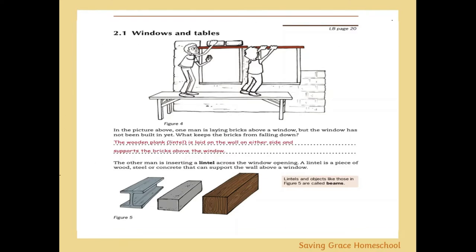The solution used in most cases is a lintel — a wooden plank or any other type of support that can be made from steel beams, reinforced concrete, or wood. You build around where you want the window to be, building up bricks on the sides until you reach the correct height, then place a lintel in.